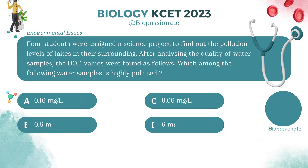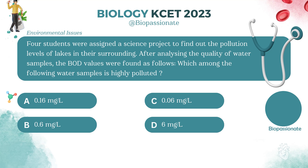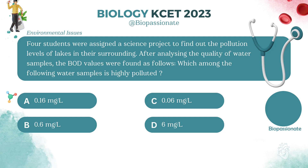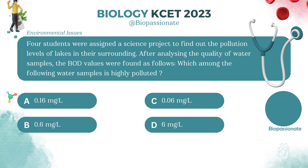Four students were assigned a science project to find out the pollution level of a lake in their surroundings. After analyzing the quality of water samples, the BOD values were found. Which among the following water samples is highly polluted? Answer: Option D.